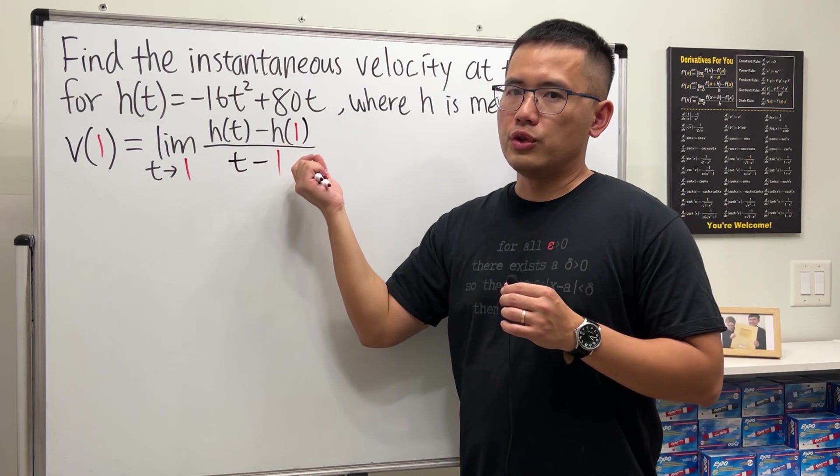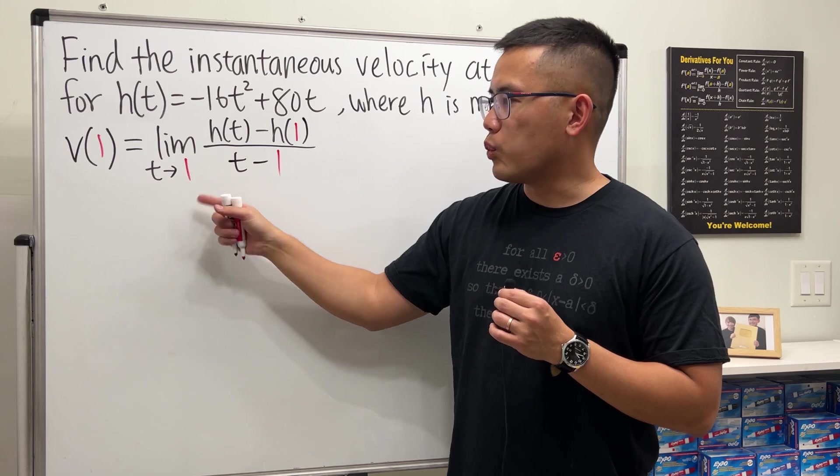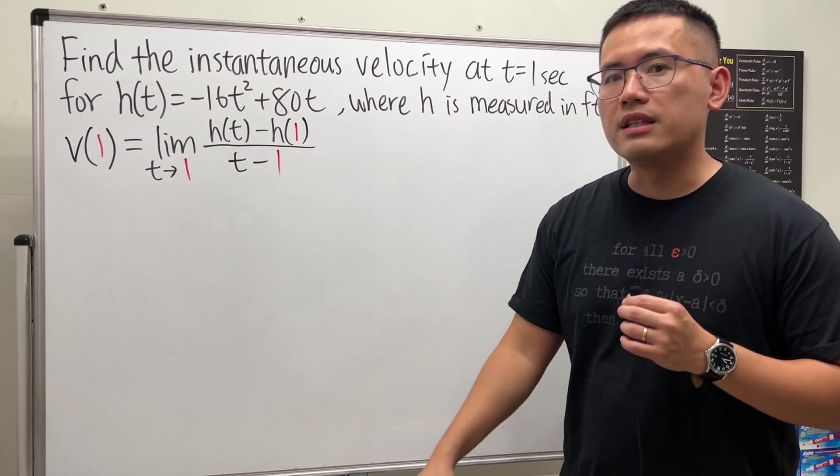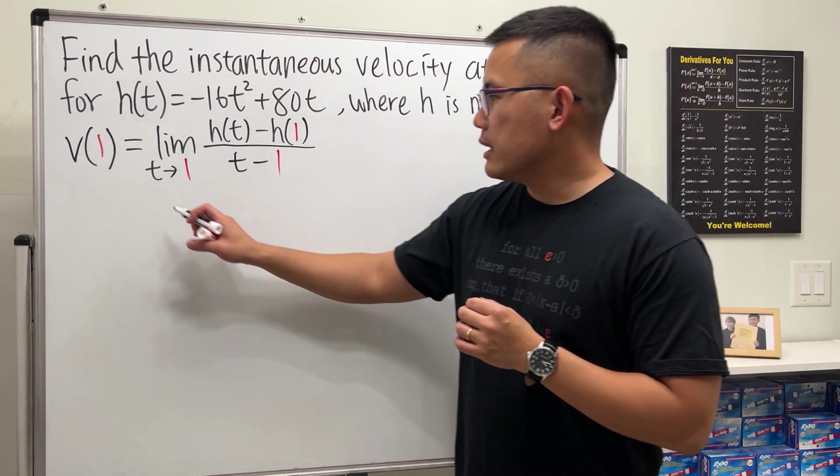And this is pretty much just the slope formula. But when we have t approaches 1, we get the instantaneous rate of change. So that's instantaneous velocity. All right, let's go ahead and work this out.